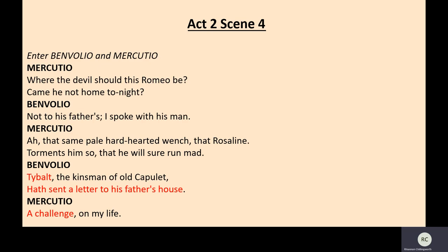So then we see Act 2, Scene 4 — the scene we're going to be looking at today. Benvolio and Mercutio enter. This is the morning after the Capulet party, and they're basically wondering where Romeo is because he didn't go home last night. Benvolio says 'Not to his father's; I spoke with his man' — Romeo never came home. They're assuming Romeo is off crying about Rosaline again.